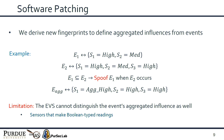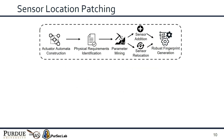However, software patching has limitations, because sometimes even the aggregated influence may not be enough to distinguish one event from others. For instance, if the sensor makes boolean-type readings, both the aggregated and individual influence of an event will be the same — just a sound-detected event. To prevent such cases, we propose sensor location patching.